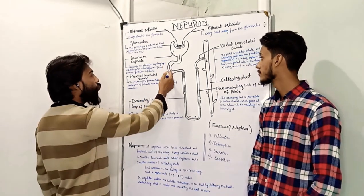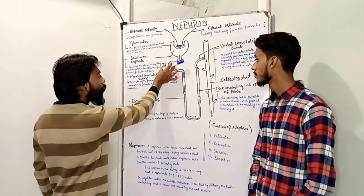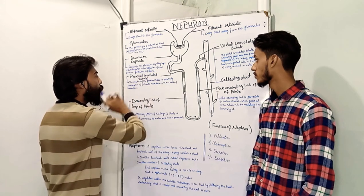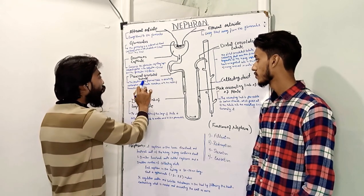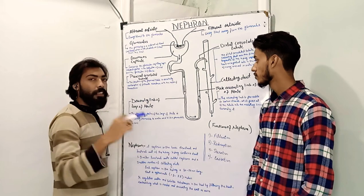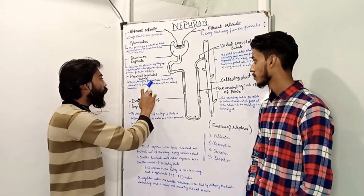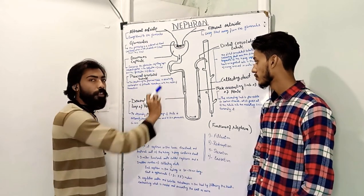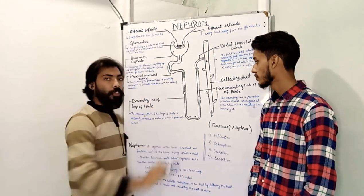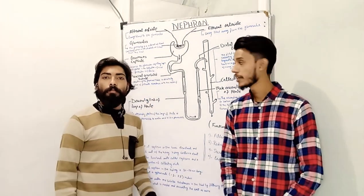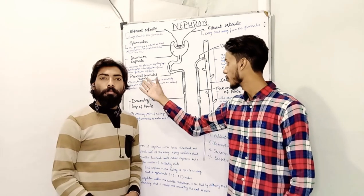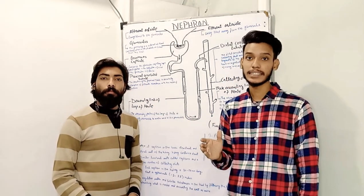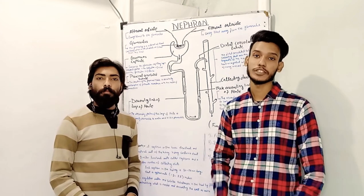This segment of the nephron is called the proximal convoluted tubule. The function of the proximal tubule is essentially reabsorption — the reabsorption of filtrate in accordance with the needs of homeostasis. This is where the process following glomerular filtration begins.